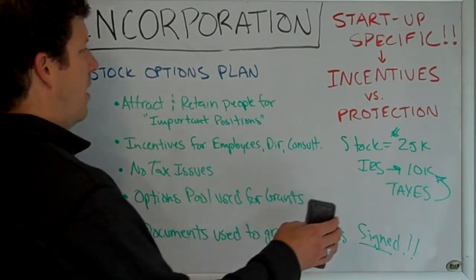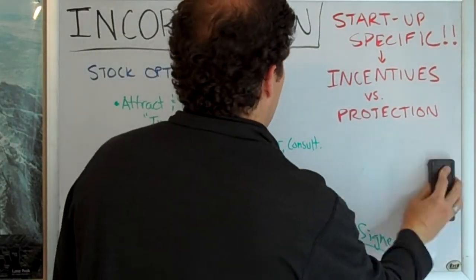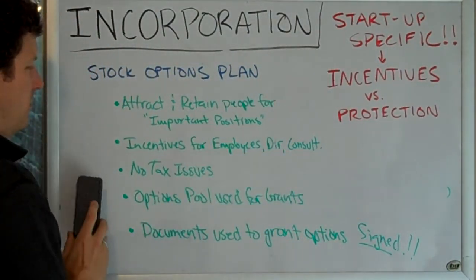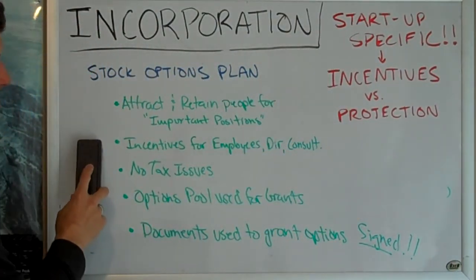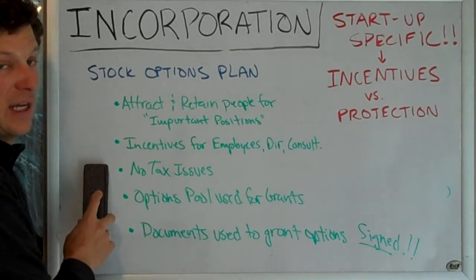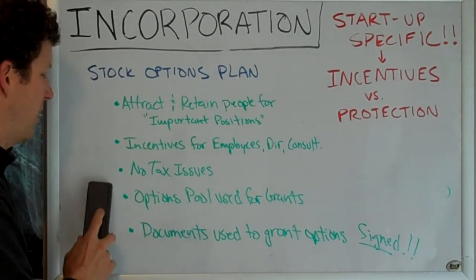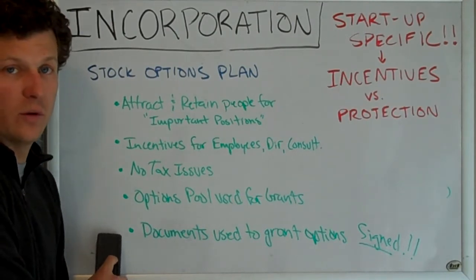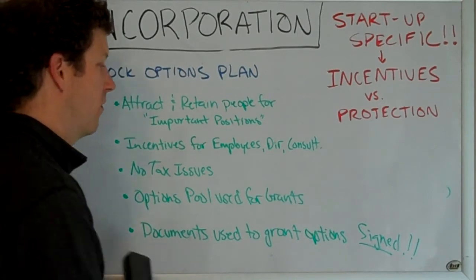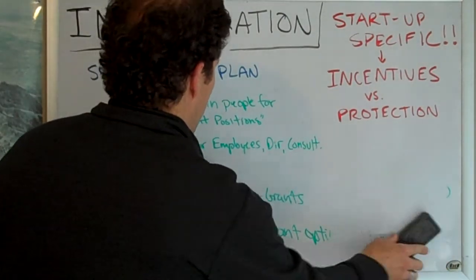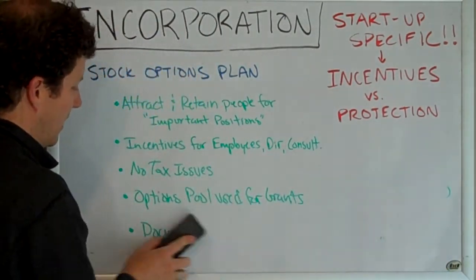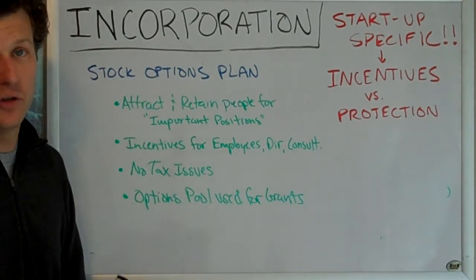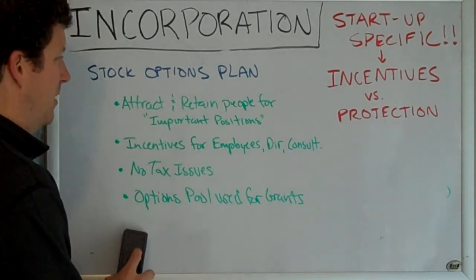As a reminder, these are incentives: to attract key employees, to pay directors or consultants, and they carry no tax liability. They come out of the options pool. Protection comes from having a signed document that records what was agreed, so there's no dispute over verbal promises. If someone comes back later and says you promised them X, Y, or Z, having signed documents avoids that confusion.